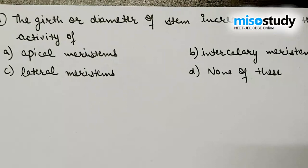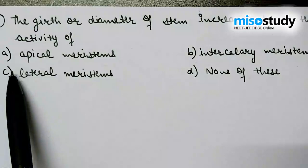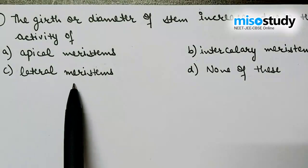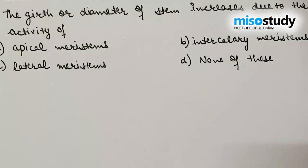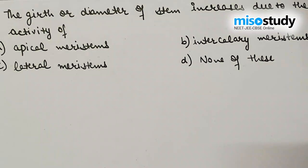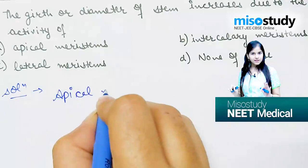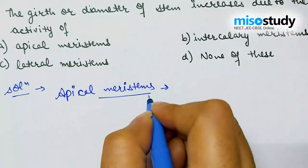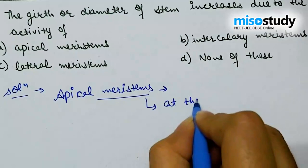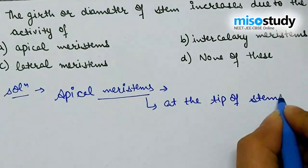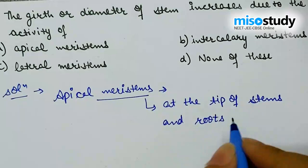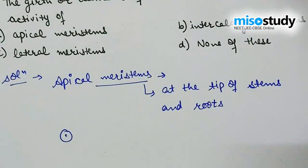The next question: the girth or diameter of stem increases due to the activity of — option A: apical meristems; option B: intercalary meristems; option C: lateral meristems; option D: none of the above. First we discuss about the apical meristems.